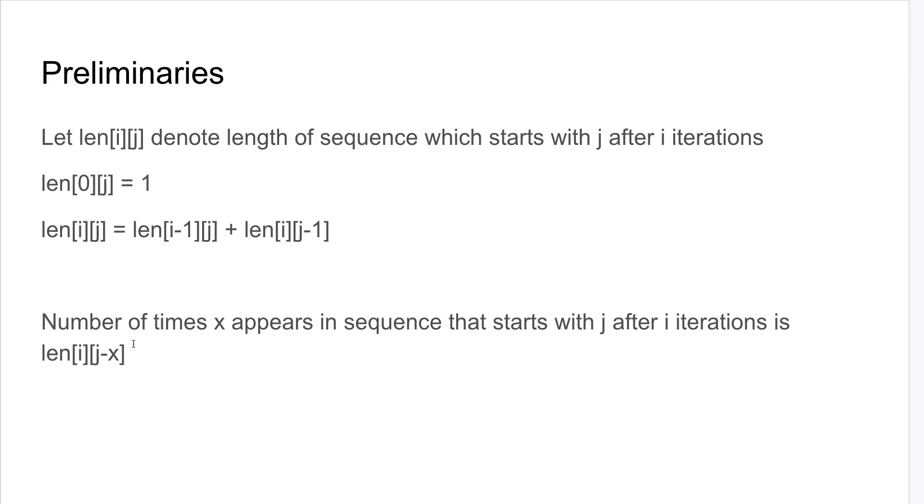Another thing is you can also write the number of times x appears in a sequence that starts with j after i iterations in terms of the DP table that you define itself. So this is very nice. You can take advantage of this later.